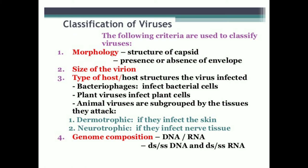Next is double-stranded RNA (dsRNA). For example, bean golden mosaic virus has double-stranded RNA. Then there is single-stranded RNA (ssRNA). For example, pigeon pea sterility mosaic virus and tobacco mosaic virus have single-stranded RNA. About 90 to 95% of viruses are single-stranded RNA. So we classify viruses on the basis of genome composition: dsDNA, ssDNA, dsRNA, or ssRNA.